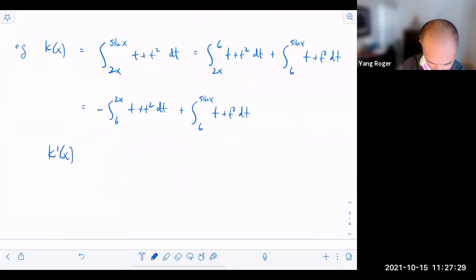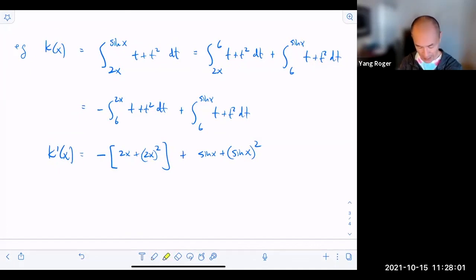So you got K prime of x is equal to negative, let's put the whole thing in parentheses so you don't forget to distribute the negatives. So this would be 2x plus 2x squared. That's the first piece. And then the second piece is going to be sine of x plus sine of x squared. Does that make sense? So you can simplify this by distributing, but I'm going to leave it like this. Because this kind of shows how you got the answer.